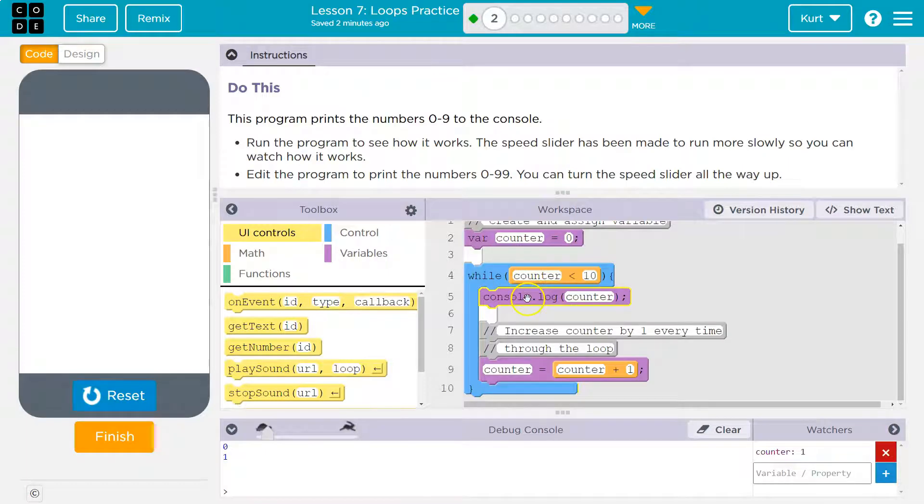Hits the loop again. Yep, one's less than 10. Put one on the console. Add one to counter. Okay, counter is now equal to two. Two's less than 10. Output two. Add one to counter, so counter is now three. Three is less than 10, and so on.